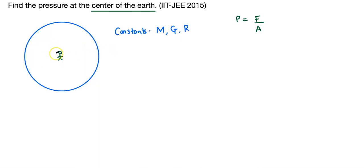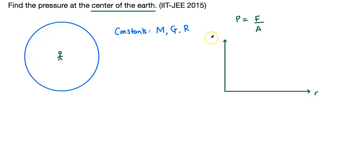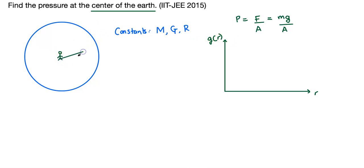What is the force experienced by this person standing at the center of the Earth? For that, let's recall how acceleration due to gravity varies inside the Earth. We are interested in calculating g because force is nothing but mass times the acceleration due to gravity, which we can then divide by area. Here, g is referred to as a function of r, where r is defined as the distance from the center. When r equals capital R we are on the surface; when r is less than R we are inside; and when r is greater than R we are outside.